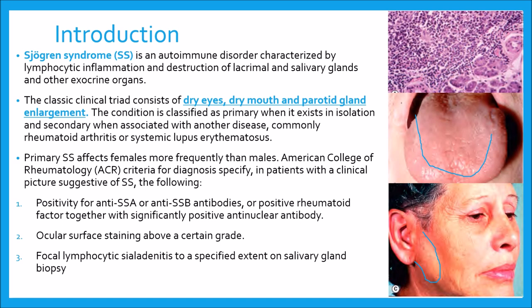Although in clinical practice the diagnosis may be made on less stringent grounds, the American College of Rheumatology criteria for diagnosis specify in patients with a clinical picture suggestive of Sjogren's syndrome: 1. Positivity for anti-SSA or anti-SSB antibodies, or positive rheumatoid factor together with a significantly positive anti-nuclear antibody. 2. Ocular surface staining above a certain grade. 3. Focal lymphocytic sialadenitis to a specified extent on salivary gland biopsy.